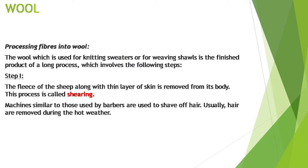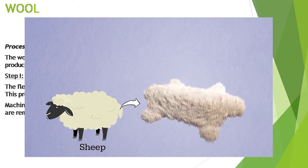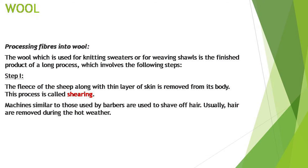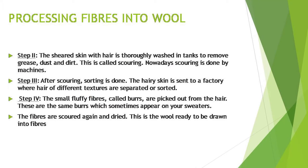The wool used for knitting sweaters or for weaving shawls is the finished product of a long process which involves the following steps. Step one is shearing: the fleece of the sheep along with a thin layer of skin is removed from its body. This process is called shearing. Machines similar to those used by barbers are used to shave off hair. Usually hair is removed during hot weather.